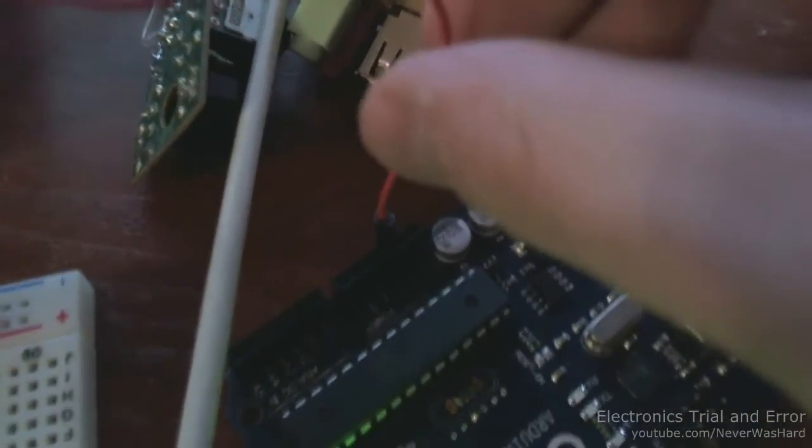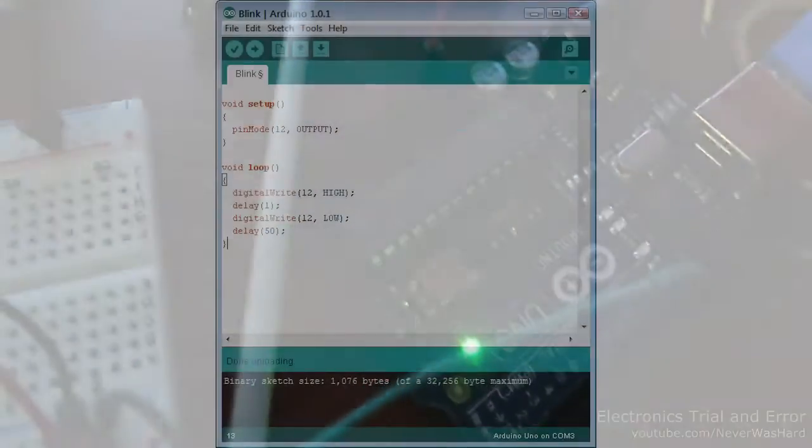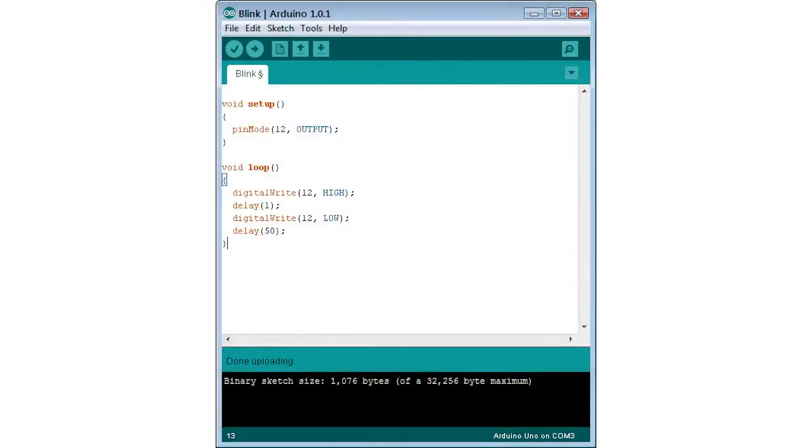Here's the plus 5 volts. And here is the program which is generating the clock signal. Basically we set the 12th pin to high for 1 millisecond, then to low, and wait 200 milliseconds, thereby creating a clock pulse.